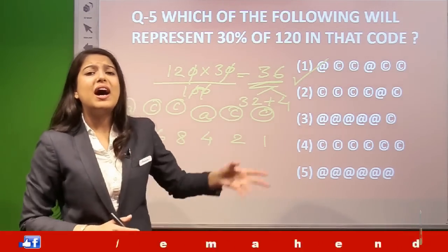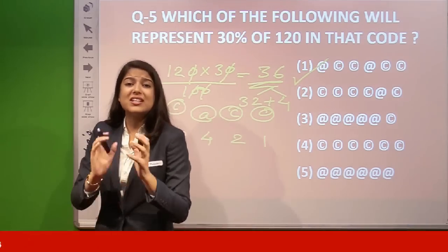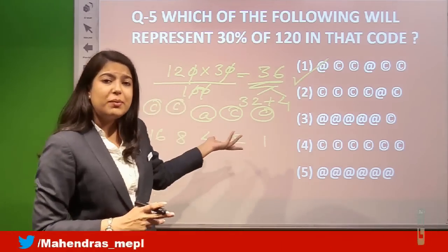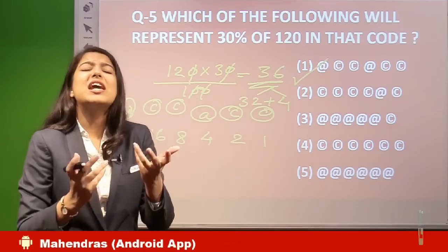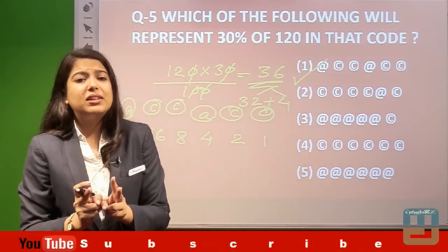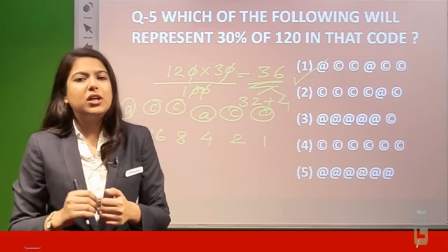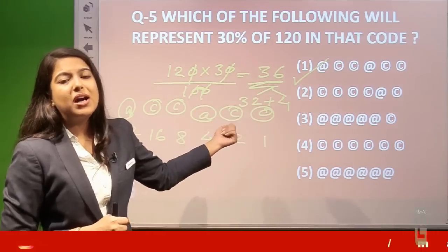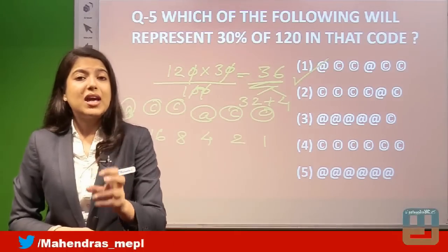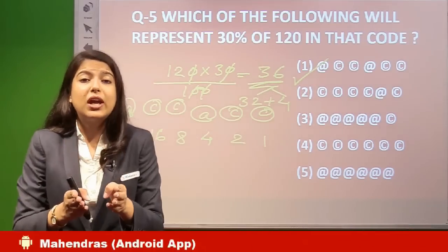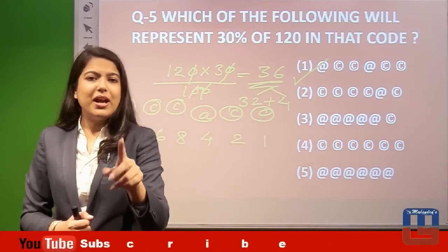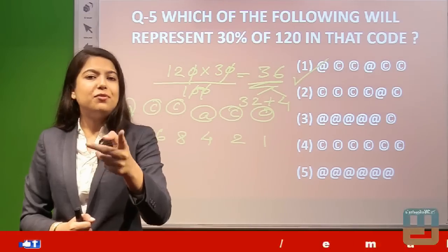These questions are actually easy to solve once you understand the method. Sometimes the symbols used are @/©, sometimes $ and #, or any two symbols — but the concept is always the same: two symbols for 0 and 1. Practice these questions as they can frame 3 to 5 questions in your examination. Just remember: @ for utilized digits, © for non-utilized digits.